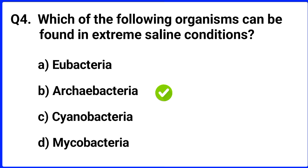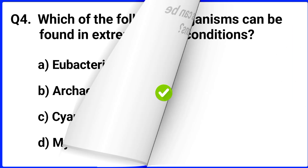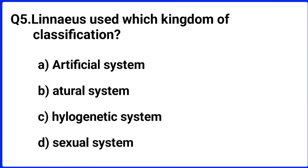Question number five. Linnaeus used which kingdom of classification? The right answer is option A: artificial system.